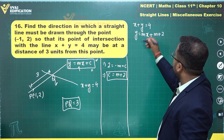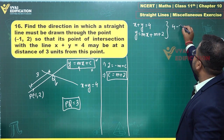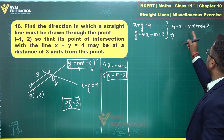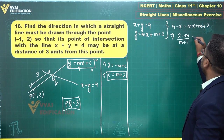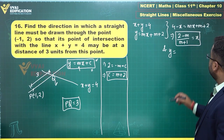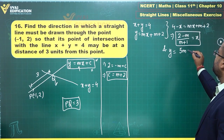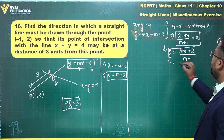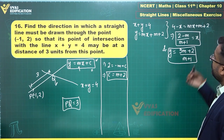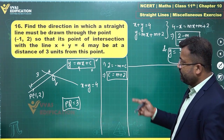Solving the two equations: substituting y = 4 - x into y = mx + m + 2 gives 4 - x = mx + m + 2, so x = (2 - m)/(m + 1). Then y = 4 - x = (4m + 4 - 2 + m)... simplifying gives y = (5m + 2)/(m + 1). These are the coordinates of point Q.